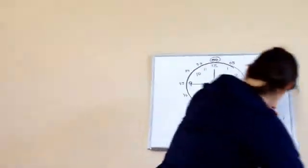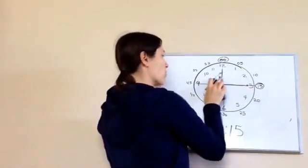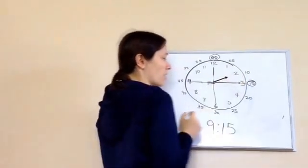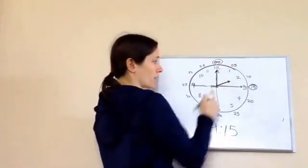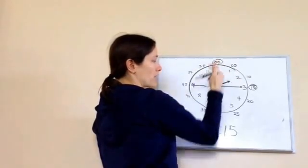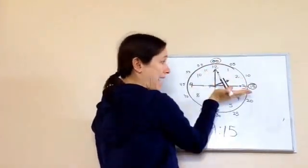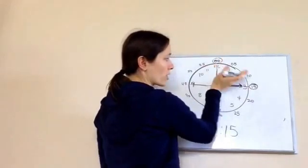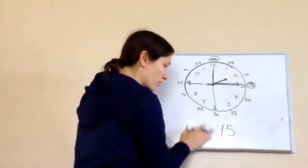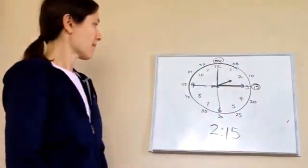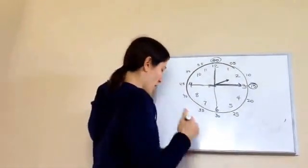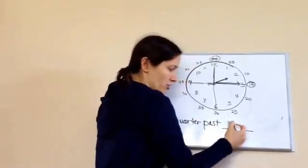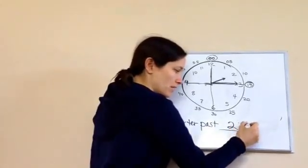Let's try another one. If I told you it was a quarter past 2 — so it's 2 o'clock but not just 2 o'clock. 2 as the hour, 00 as the minutes — it's not just 2 o'clock, it's a quarter past 2. So the hand moves one quarter, and it would be 2:15. So far you've learned 'a quarter past such and such' — a quarter past 2 means 2:15.